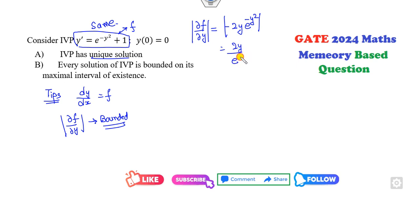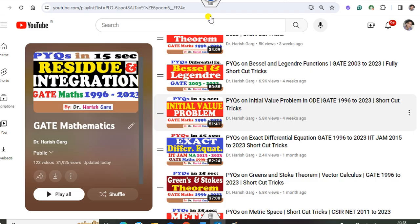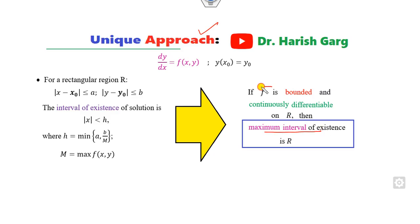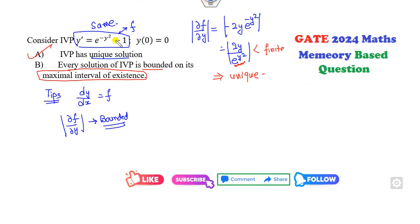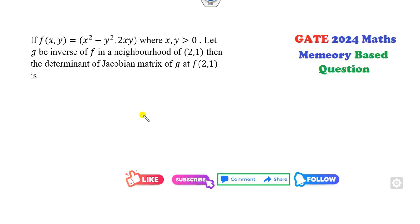Clearly this quantity is bounded because e^(y²) is increasing and 1/z is decreasing, so it gives a unique solution. For the maximum interval of existence, we check that f = 1 + e^(−y²) is bounded — it is, due to the negative exponent — and it is continuous and differentiable. So the maximum interval of existence is ℝ, making both options A and B correct.